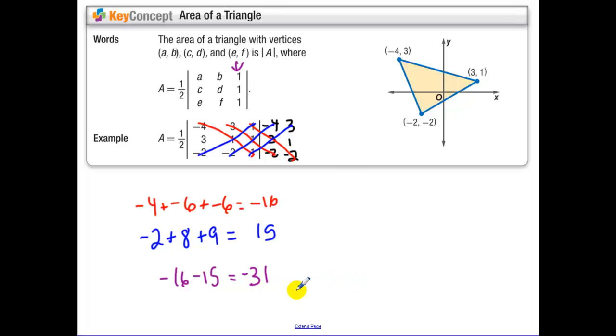Now remember, you have to do negative 16 minus 15, which is negative 31. Since area is positive, we take the absolute value, so 31 divided in half gives us area of 15.5 square units.